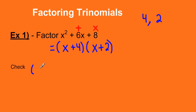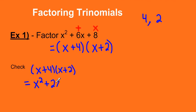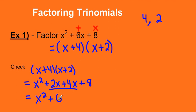Let's verify: x plus 4 times x plus 2. Using the FOIL rule — first terms x times x is x squared; outside terms x times 2 gives me 2x; inside term 4 times x is 4x; and last two terms 4 times 2 gives me 8. Collecting the middle terms: 2x plus 4x is like 2 oranges plus 4 oranges, which is 6x, plus 8. Is that x squared plus 6x plus 8? Yes, so my factoring was done correctly. The factored form is x plus 4 times x plus 2.